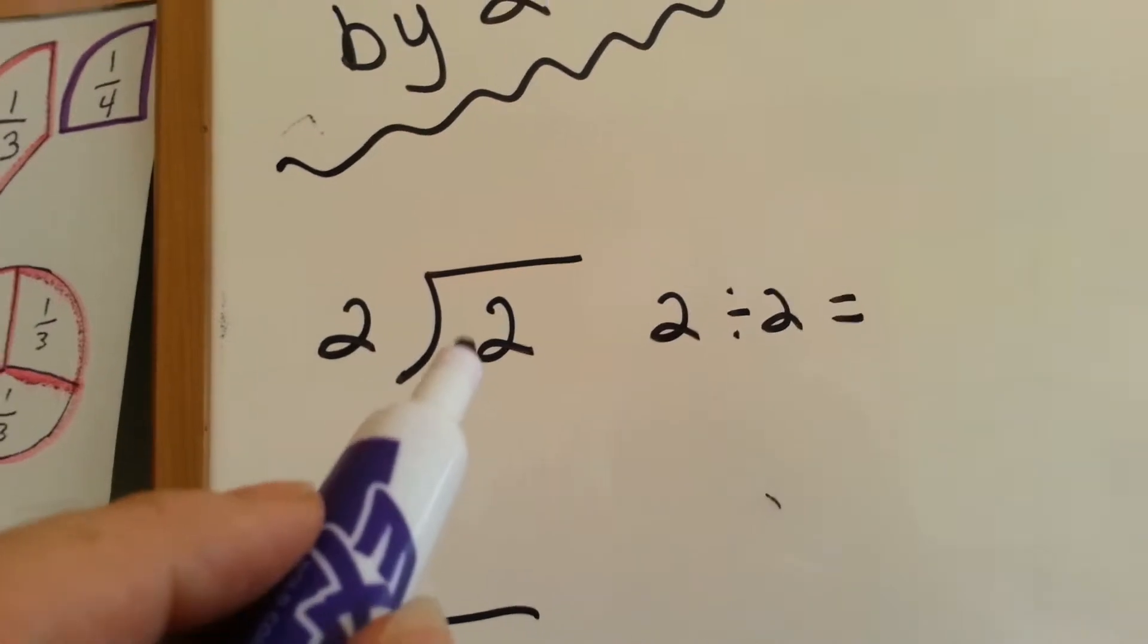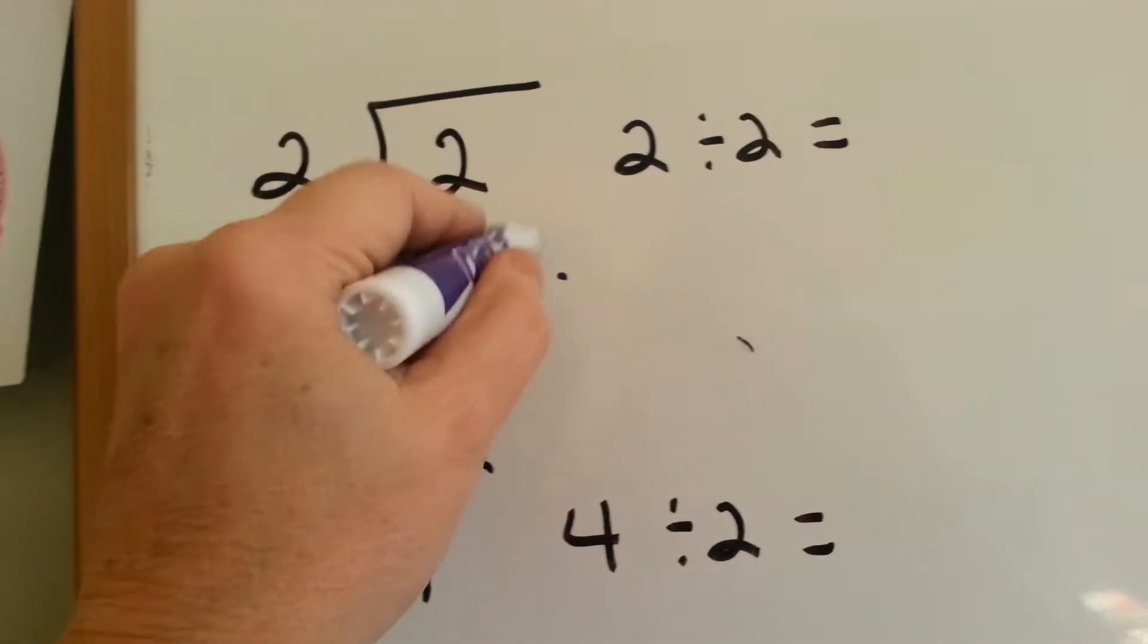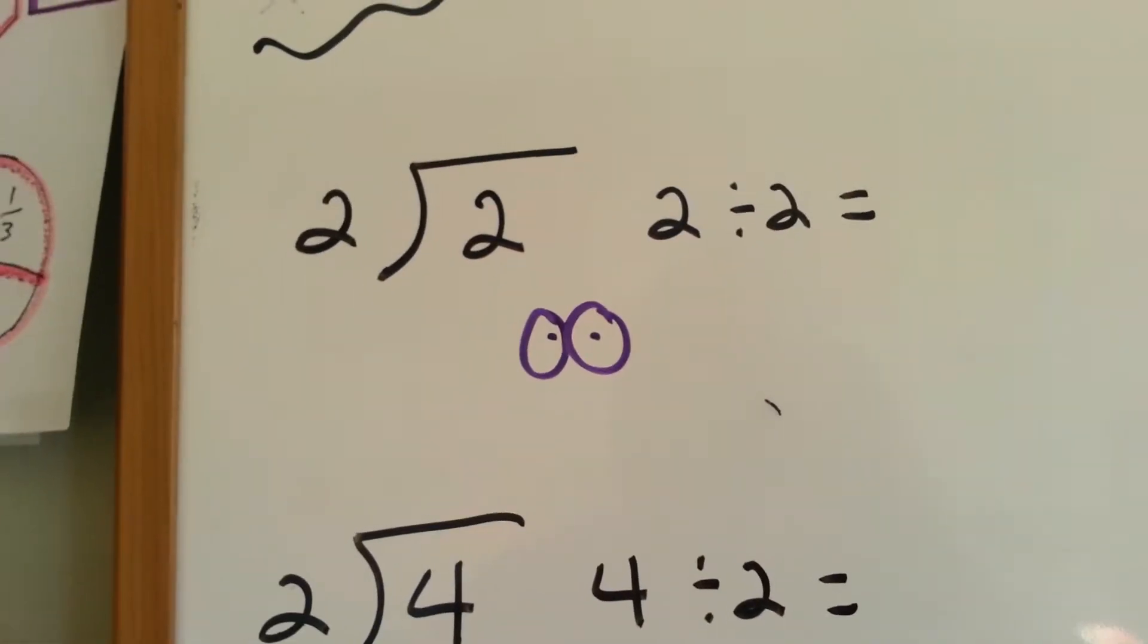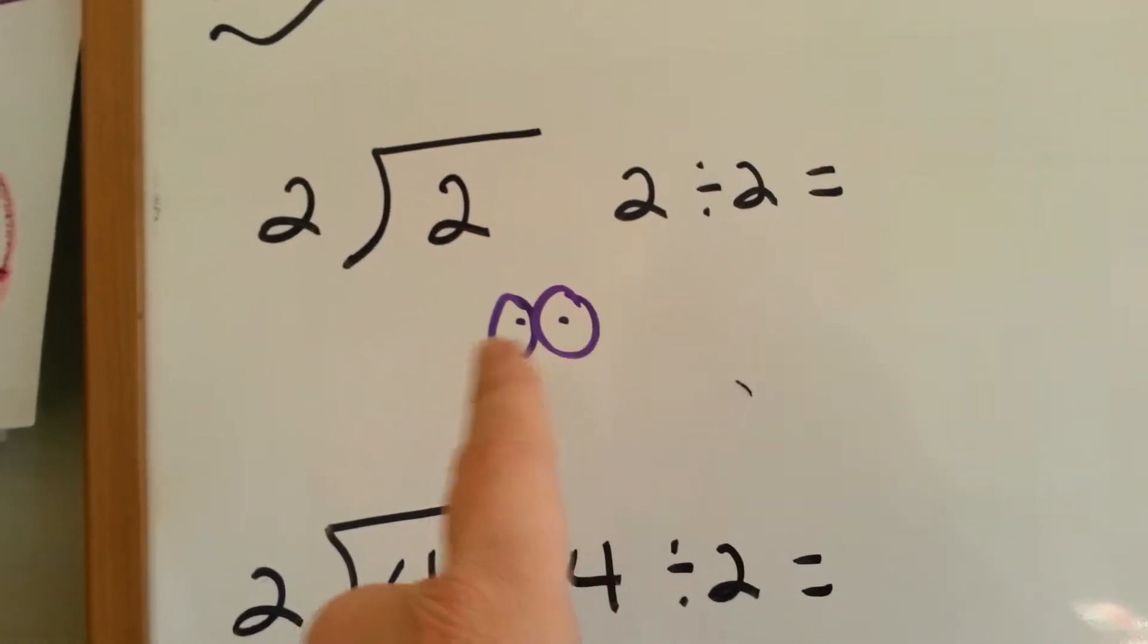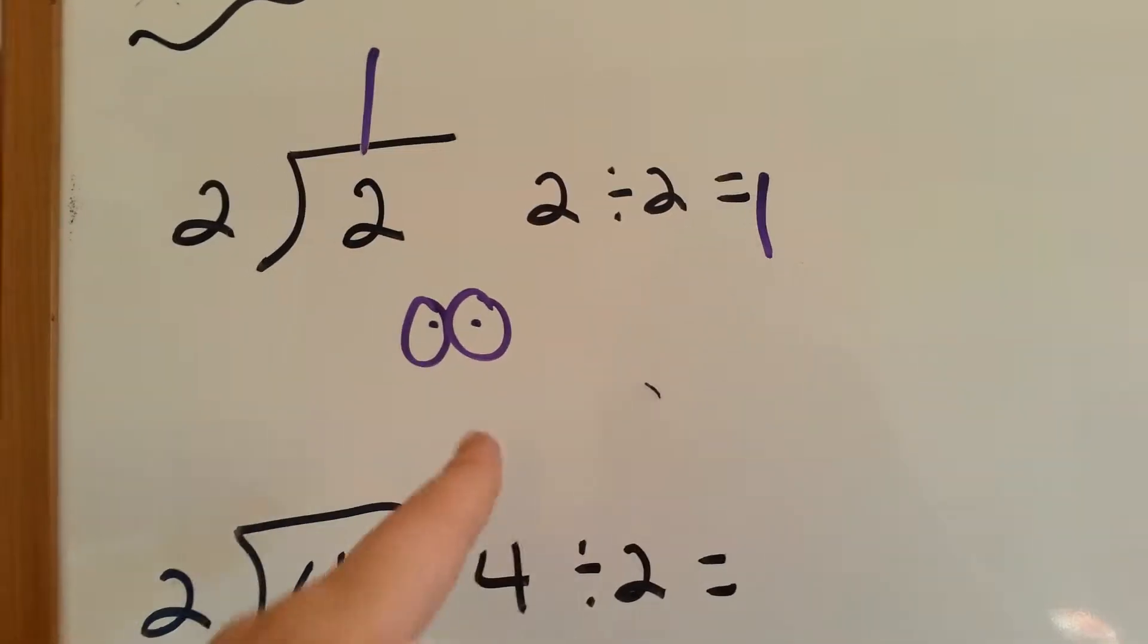So if you had two dots, and you wanted to divide them into two groups, how many dots would you have in each group? 1. So 2 divided by 2 is 1. See that? Does it look like a face?